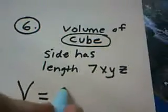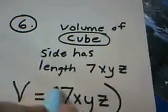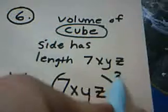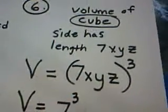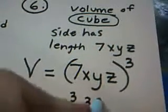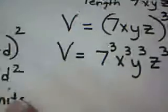We're going to take 7x, y, z, and raise the length of that one side, or edge, to the third power. We're going to get 7 to the third, x to the third, y to the third, z to the third. And let's see. 7 to the third power.